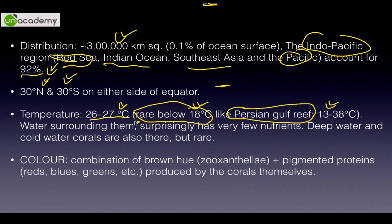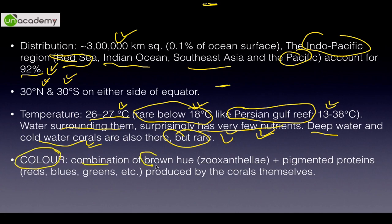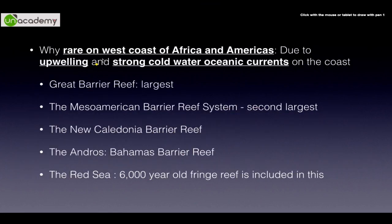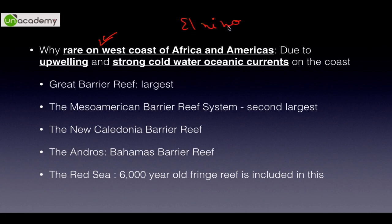Interestingly, the water surrounding coral reefs is not very nutritious, yet they support very high biodiversity. Deep water and cold water corals do occur but are rare. Color comes from a combination of the brown hue provided by zooxanthilae algae plus pigmented proteins of the corals themselves. Corals are rare on the west coast of Africa and west coast of America — places like Chile — because of upwelling and strong cold oceanic currents keeping the water insufficiently warm.